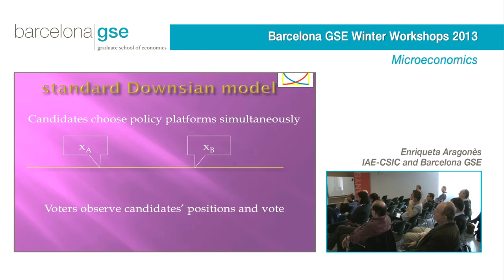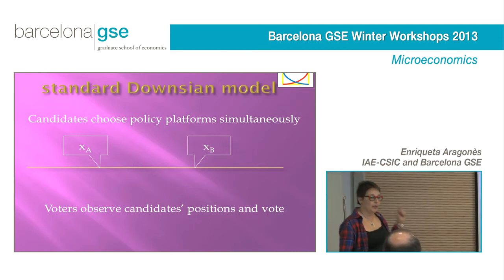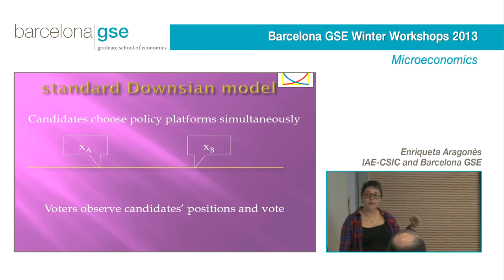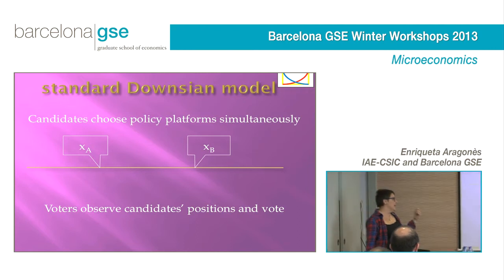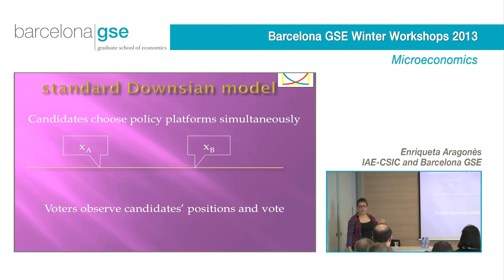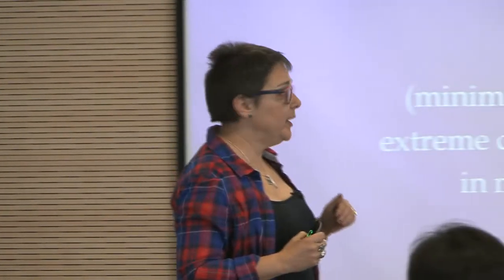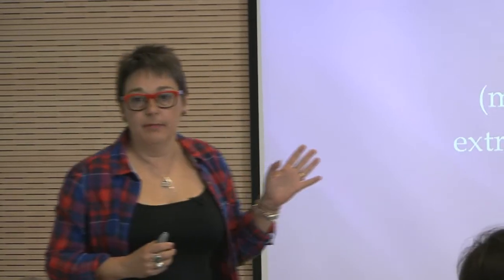We have two candidates that choose simultaneously a policy position in a one-dimensional policy space, and then voters observe what these policy positions are and decide which politician to vote for. In the standard Hotelling model we get convergence of the platforms chosen by the parties to the median voter's most preferred policy, but here we have extremism.